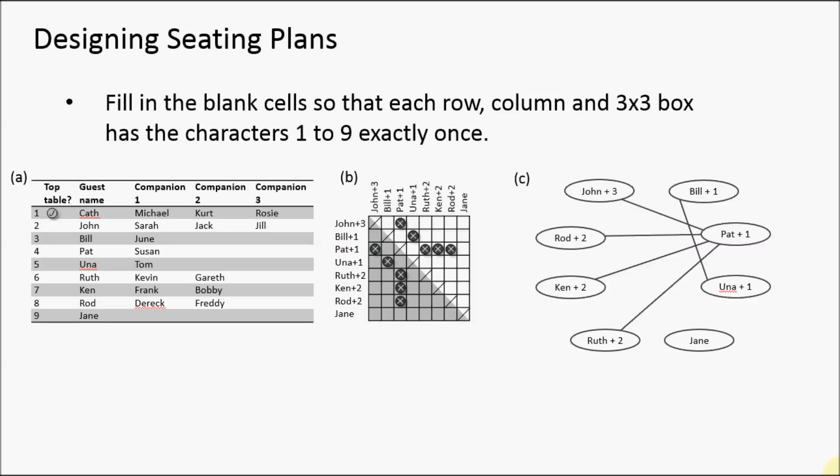Our third example involves designing seating plans for large social gatherings such as weddings, gala dinners, and charity fundraisers. Imagine we're given a list of guests, and guests belonging to the same family or couples are placed into the same row.